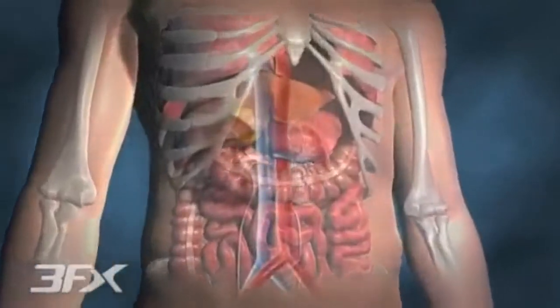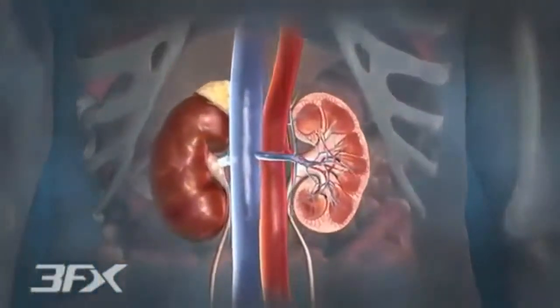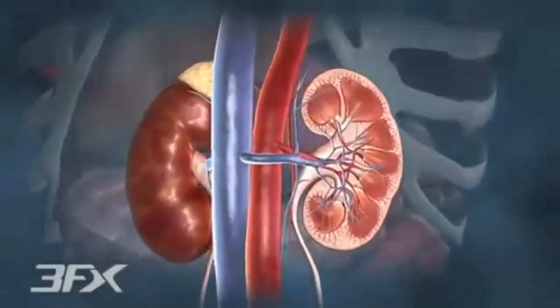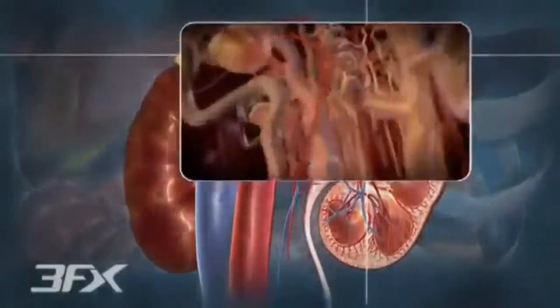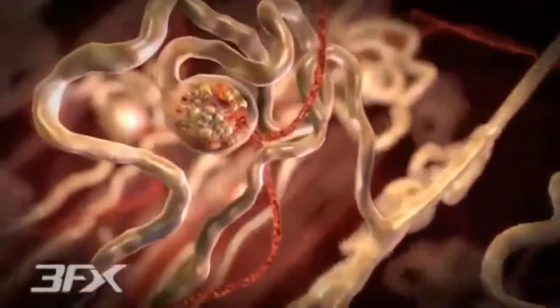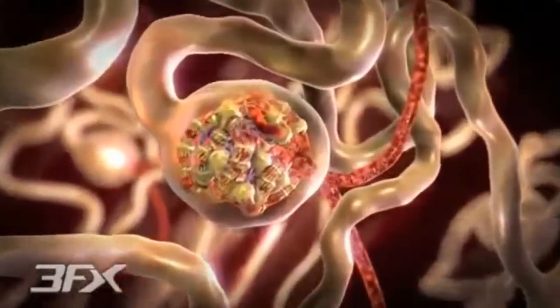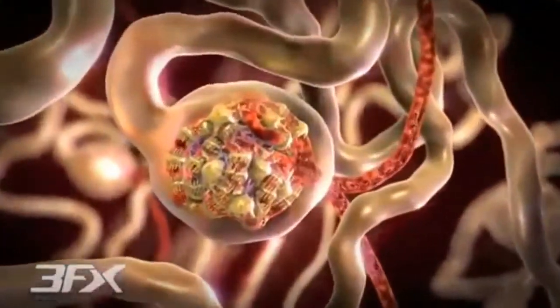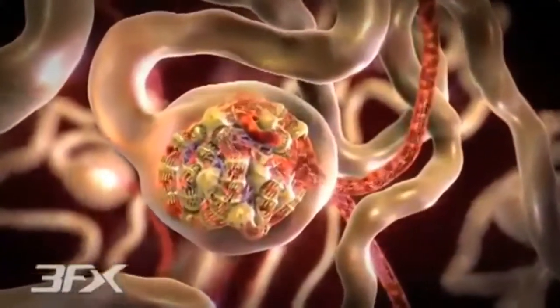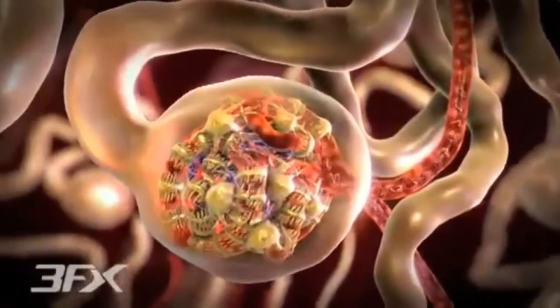The development of diabetic nephropathy involves hypertension and hyperglycemia-induced changes in multiple pathways that contribute to morphological changes in the kidneys. The glomerulus is a globular-shaped structure composed of capillaries that are actively involved in the filtration of fluid from the blood to form urine.